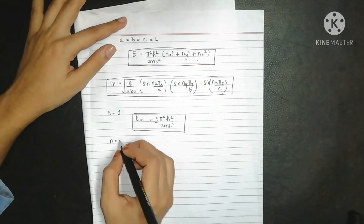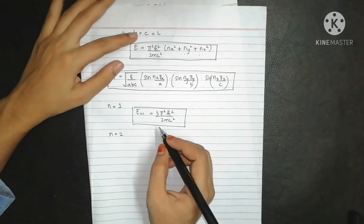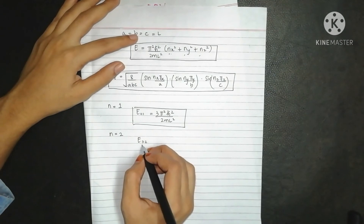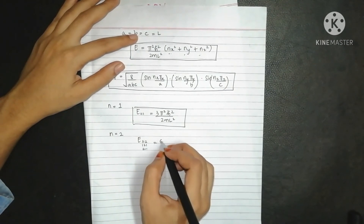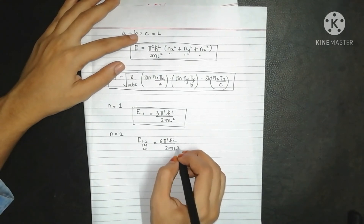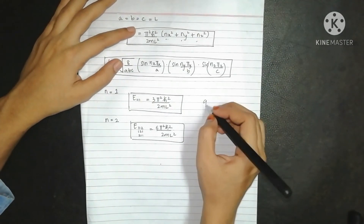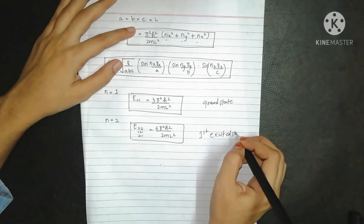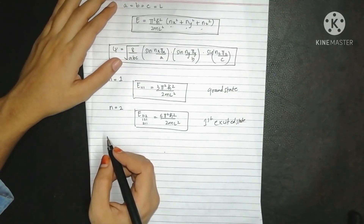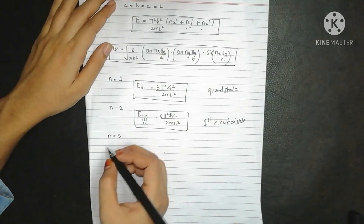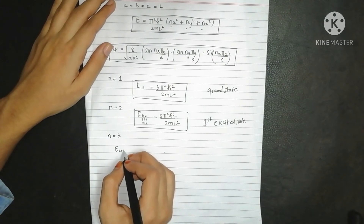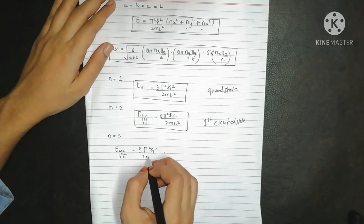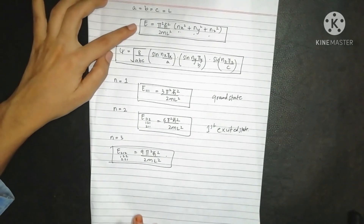Moving to the first excited state, combinations such as (nx, ny, nz) = (2,1,1), (1,2,1), (1,1,2) give nx²+ny²+nz² = 6, so E = 6π²h-bar²/(2mL²). For the second excited state, combinations like (2,2,1), (2,1,2), (1,2,2) give a sum of 9, so E = 9π²h-bar²/(2mL²).